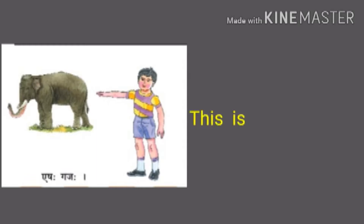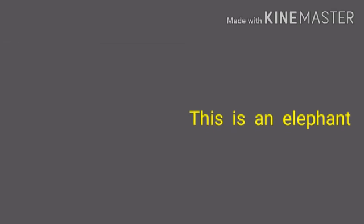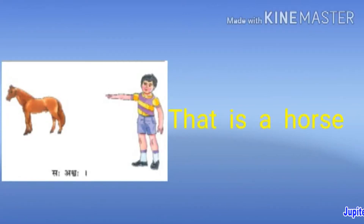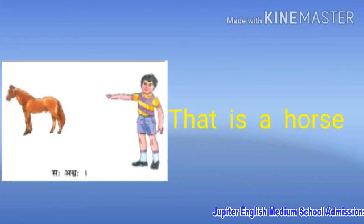The next example is Ishaha Gajaha — this is an elephant. We use 'an' instead of 'a' because 'elephant' starts with a vowel; in front of any vowel you must use 'an.' The next Pulling Ekavachnam example is Saha Ashwaha — that is a horse.